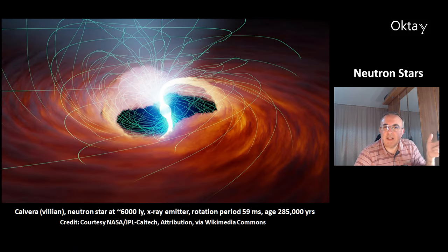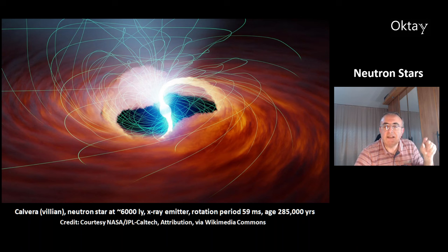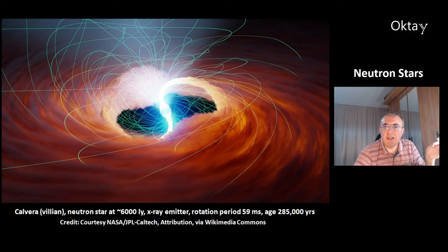This is Calvera — Calvera is the villain in the movie The Magnificent Seven, and it's also the name of this neutron star at 6,000 light years distance. It is an X-ray emitter, its rotation period is just 59 milliseconds, and its age is 285,000 years.